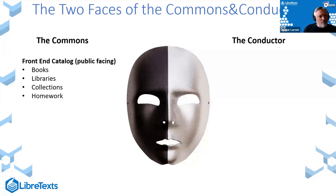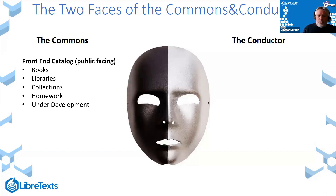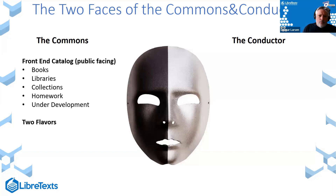The Commons allows cataloging of homework systems, assets, and ancillary materials. It allows you to identify projects under development, so authors can check if similar projects are being created elsewhere — avoiding recreating the wheel and capitalizing on the 'sharing is caring' model of OER. We have two flavors: a central LibreCommons for the overall LibreTexts project, and branded instances for campuses, districts, or states that join our LibreNet consortium.